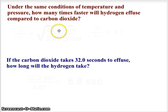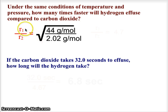Let's do a second sample. Under the same conditions of temperature and pressure, how many times faster will hydrogen effuse compared to carbon dioxide? We look up carbon dioxide and find it's 44 grams per mole. Hydrogen, remember hydrogen is diatomic, so even though the periodic table says 1.01, we need to take it as H2, making it 2.02.